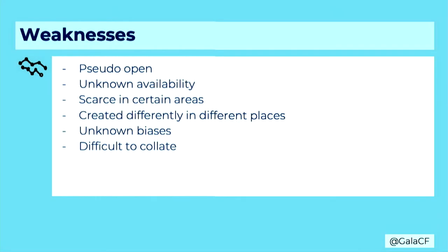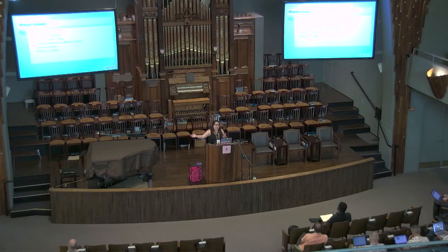What are some of the weaknesses? It's pseudo-open — not totally open. These platforms have this data and they can decide to close it at any time. There are areas where there's not a lot of it, especially in rural areas or areas where people don't use the internet as much. It's created differently in different places — because this data is created organically, I don't know what drives people in Australia to post things versus America. That's something maybe Facebook would know, but I don't.